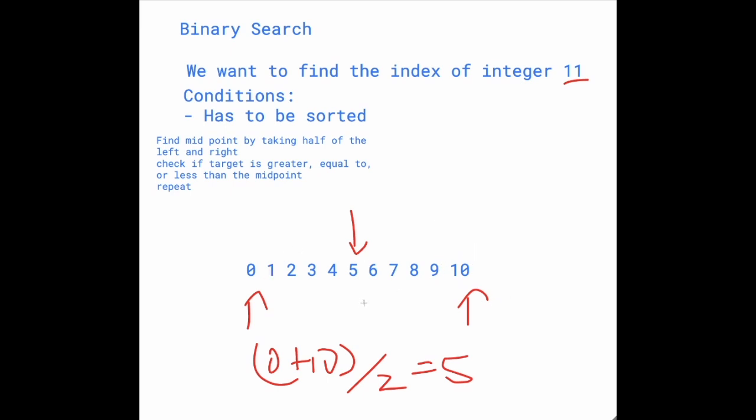Let's say the target variable or the target value is greater than the value at index 5. Then we're going to have our left point here because we can ignore all this. And we're just going to look this way.